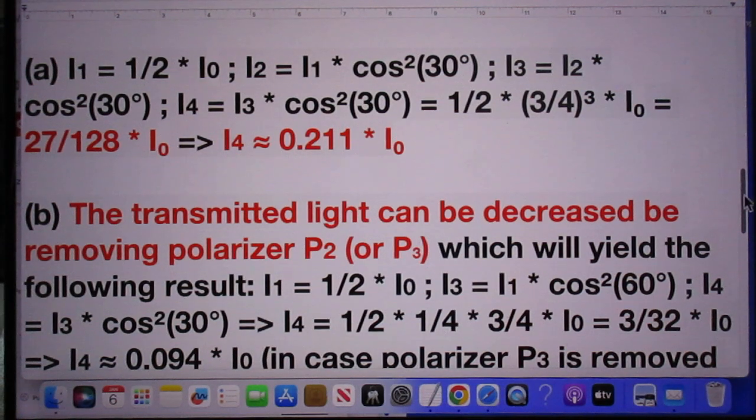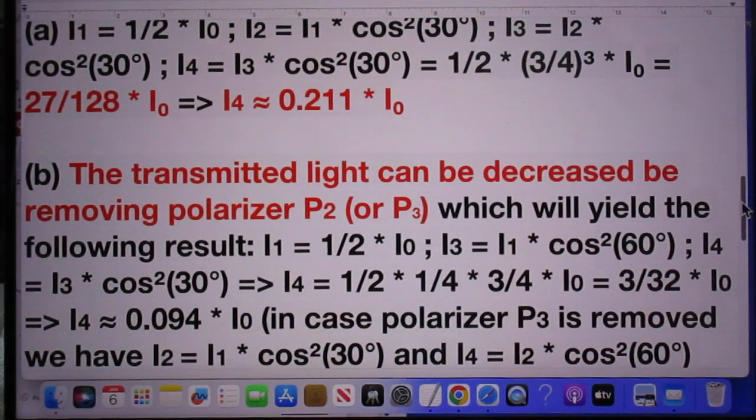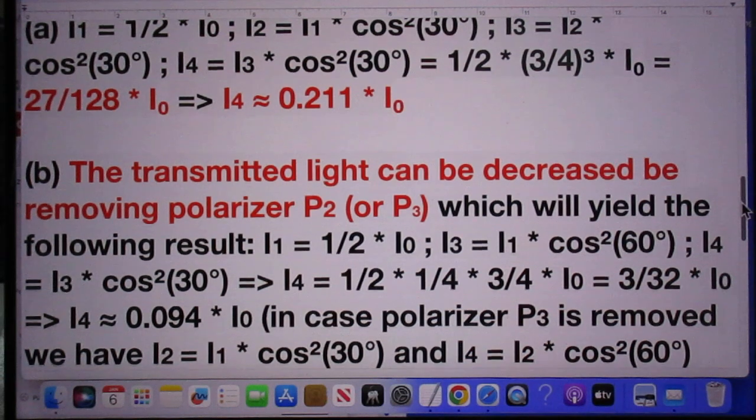So the net result is then that the answer is that the light intensity that comes out of the fourth linear polarizer is 27 divided by 128, which is 0.211—the answer to question (a).